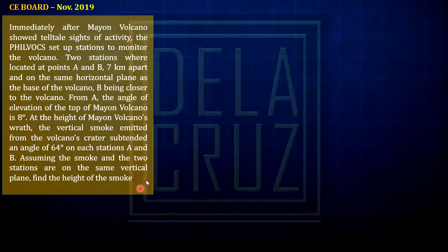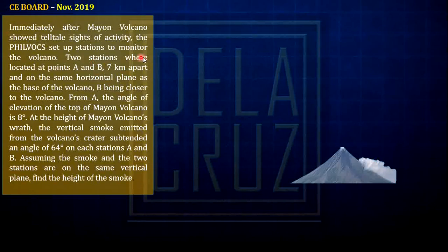This is the problem, CE board, November 2019. Immediately after Mayon Volcano showed telltale sites of activity, the P-box set up stations to monitor the volcano. Two stations were located at points A and B. So it is best to interpret it phrase by phrase. Immediately, we have a Mayon volcano. The P-box set up two stations to monitor the volcano. So two stations were located at points A and B, 7 kilometers apart, and they are on the same horizontal plane as the base of the volcano.